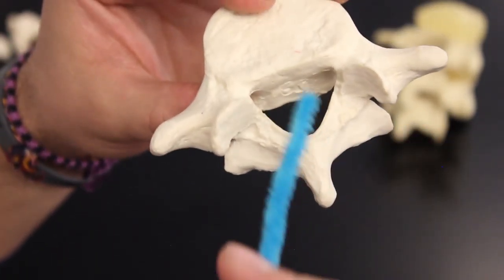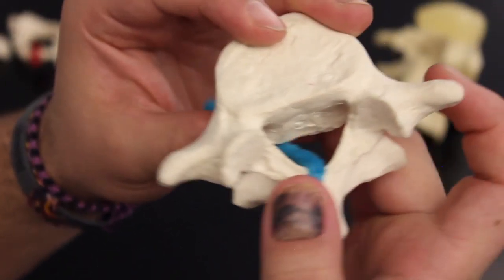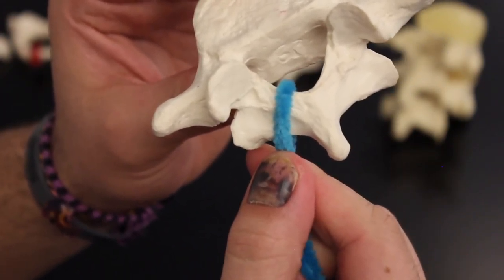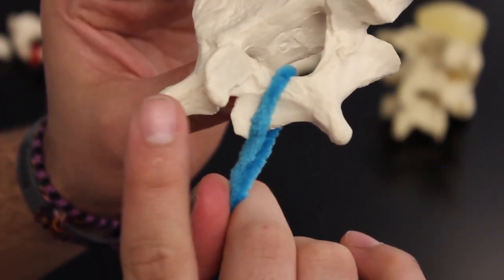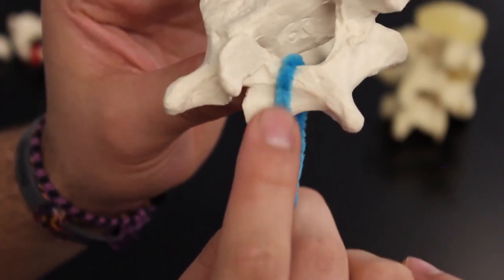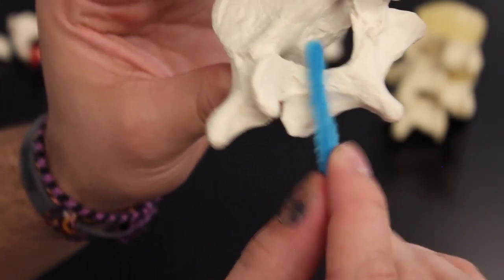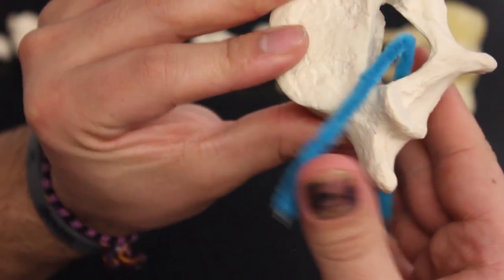If you look here, if I were to wrap around that part right there - it's that space between the spinous process and the transverse process - this right here is actually called the lamina.